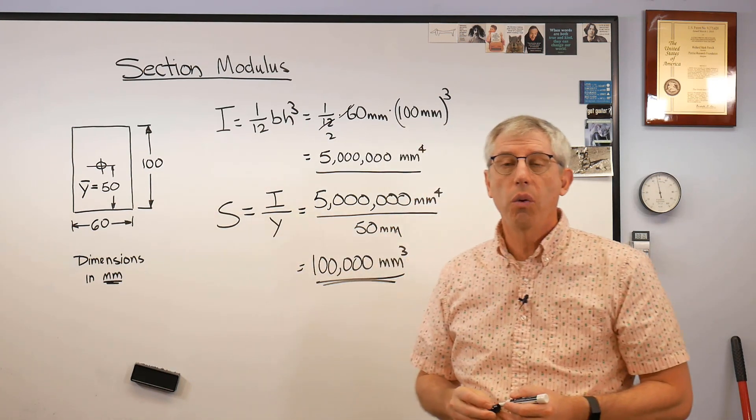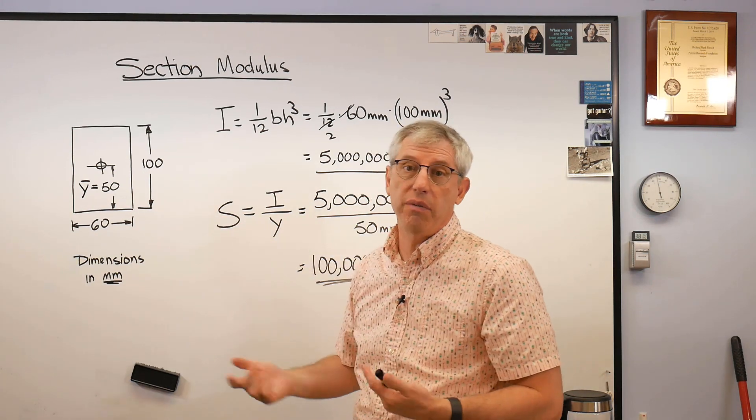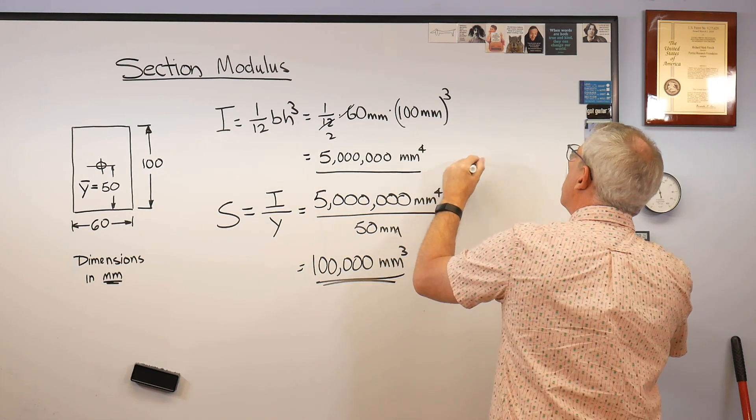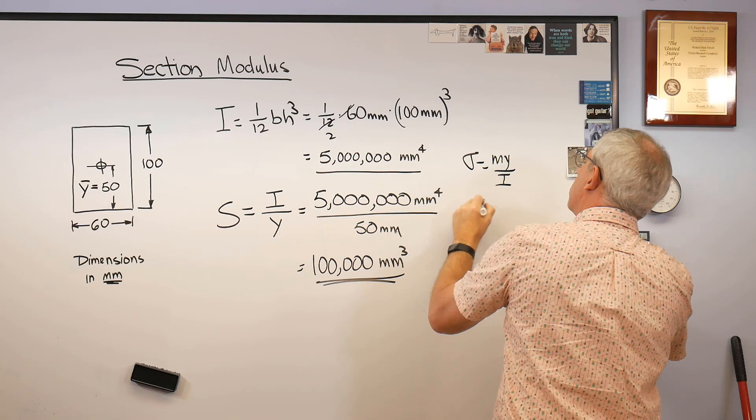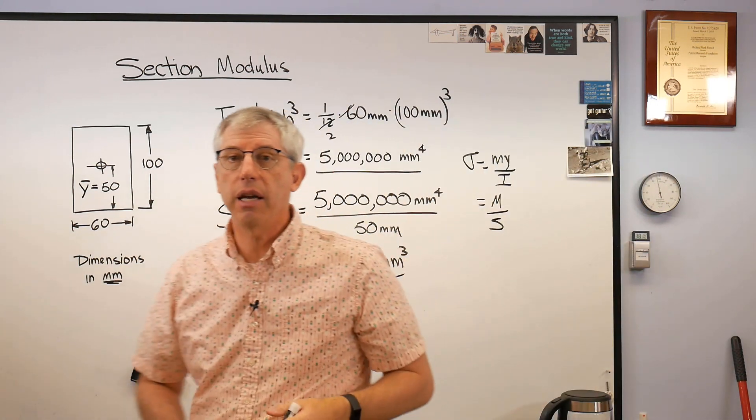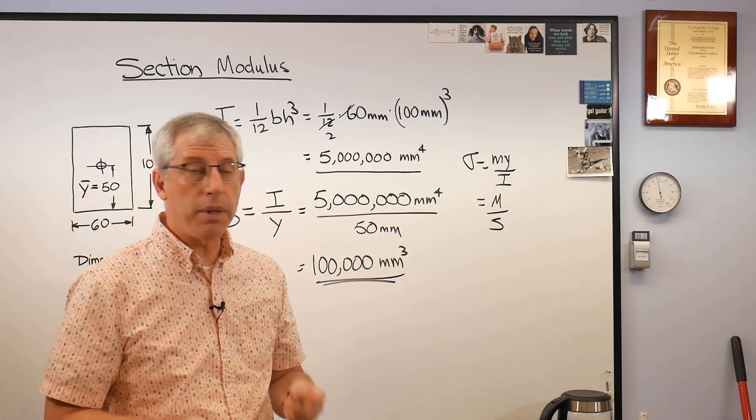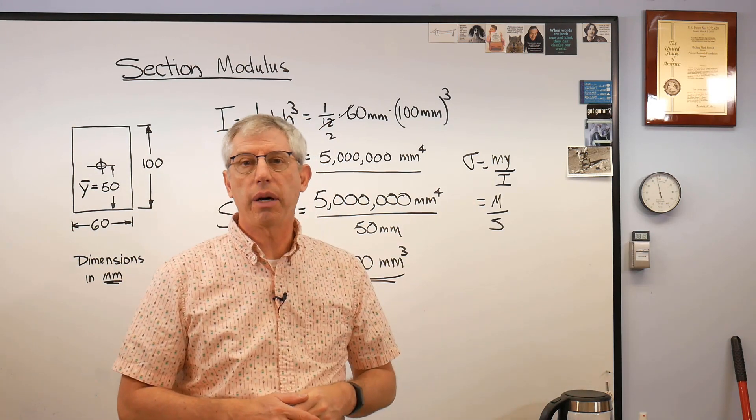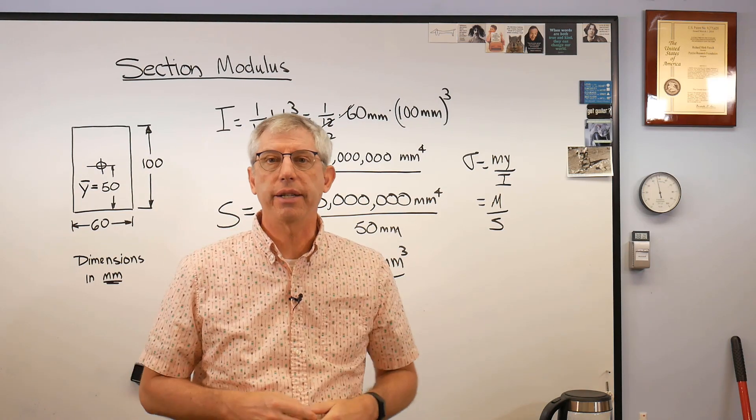Now if you want to know what the stress is, all you got to do now is take the moment applied to the beam and divide it by the section modulus, because just to remind you this is M Y over I, it's also moment over S. So that's the handy thing about section modulus. If you want to know what the maximum stress in a beam is, maximum normal stress not shear stress, just take the moment, divide it by the section modulus. You are good to go. So I hope this helps and we'll talk to you next time.